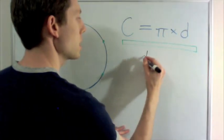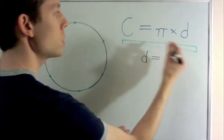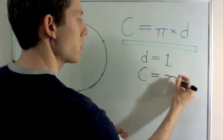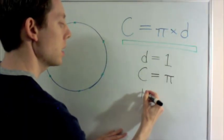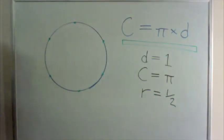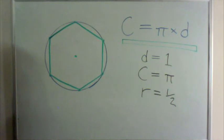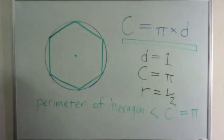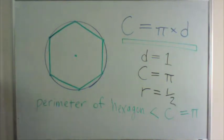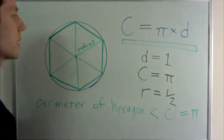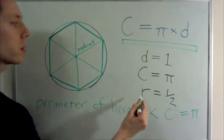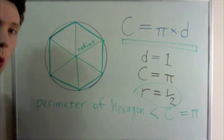If the diameter of a circle is equal to 1, using this formula, the circumference is PI times 1, which is exactly PI, and the radius is always half the diameter, so the radius is just 1 half. If I draw a hexagon inside the circle, then the perimeter of the hexagon is less than the circumference of the circle, which is PI here. I can split the hexagon into six equilateral triangles, and notice that every single side here is equal to the radius, which is 1 half.